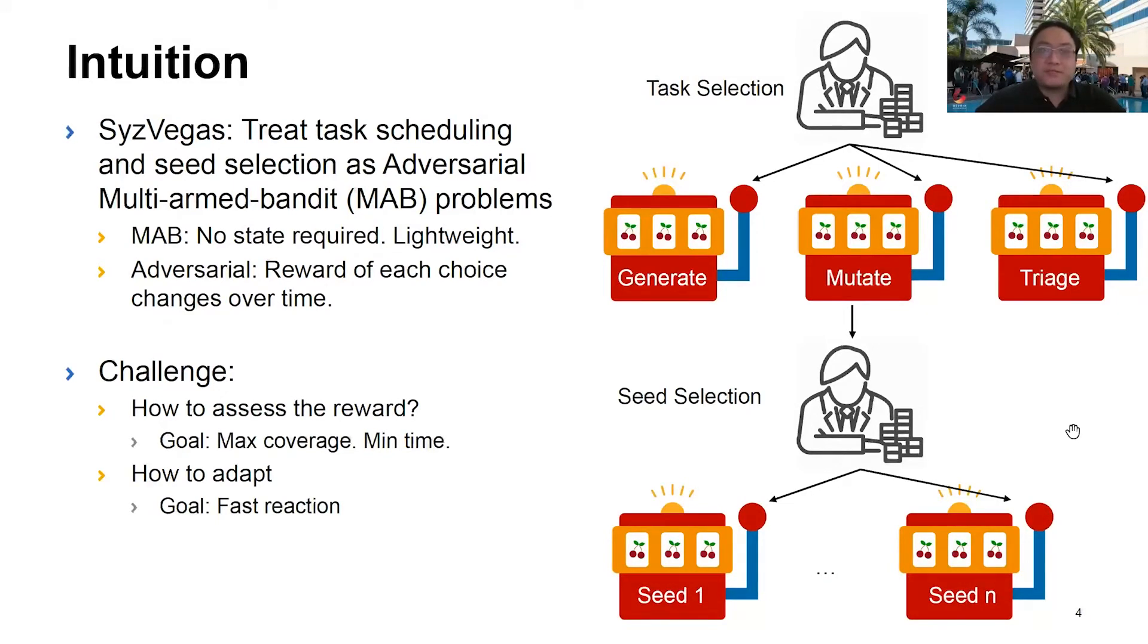So the question is, can we use reinforcement learning to improve this? Hence, we propose SysVegas, where we treat scheduling and seed selection as adversarial multi-armed bandit problems, MAB.